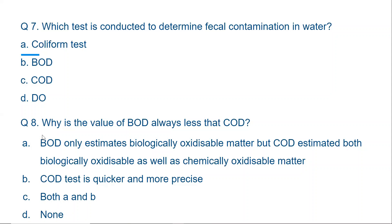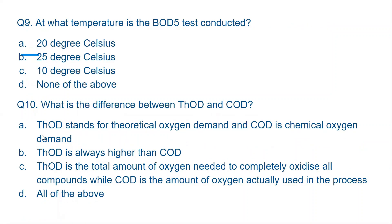Question nine: At what temperature is the BOD5 test conducted? The options are 20°C, 25°C, 10°C, or 37°C. The correct option is A — 20 degrees Celsius. That is the temperature at which the BOD5 test is conducted: the BOD bottle is incubated for five days at 20°C, and the final reading is taken on the fifth day. Remember: BOD5 at 20 degrees Celsius.